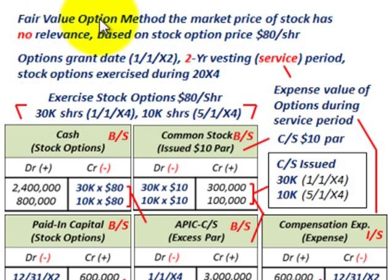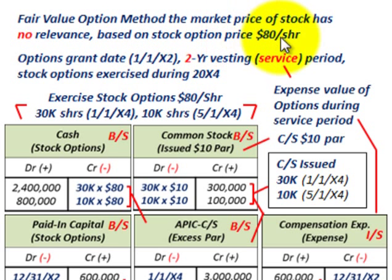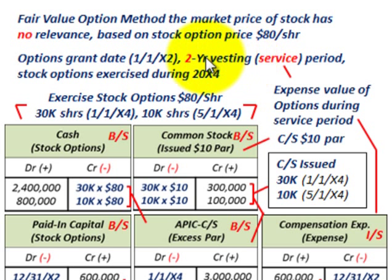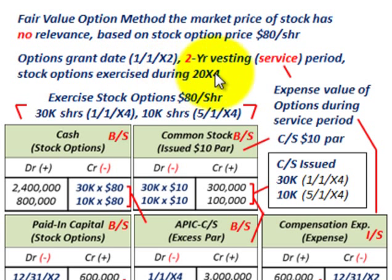We're going to be using the fair value option method where the market price of the stock has really no relevance. What we look at is the stock option price of $80 per share that the company gave as the option price. The options were granted on 1/1/X2, with a two-year vesting or service period required before they can be exercised, and the stock options are going to be exercised during 20X4.